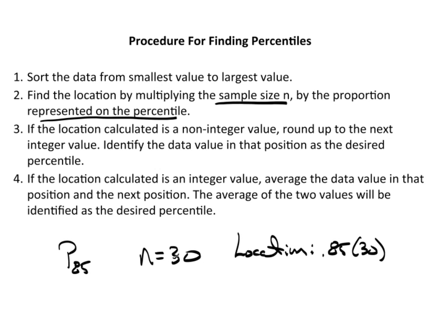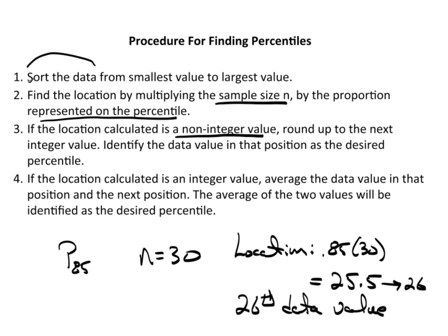Now if the location calculated is a non-integer value, well we see 0.85 times 30 is actually going to be 25.5. So in this example we would have a non-integer value, round up to the next integer value, and we identify that data value in that position as the desired percentile. So here 25.5, this is non-integer, I have a decimal here, that means round up to 26. So I go to the 26th data value, and whatever number is there after, of course, I've sorted the data, I would say that is P85.